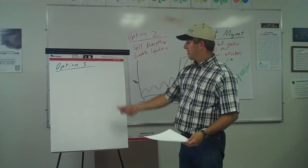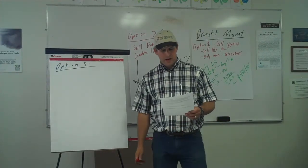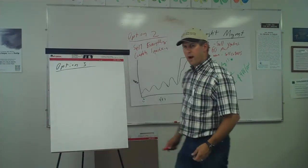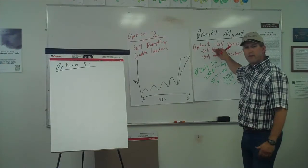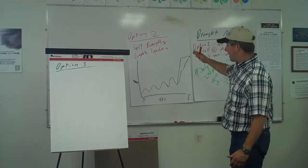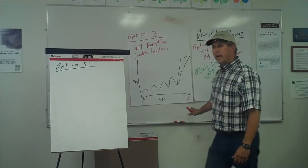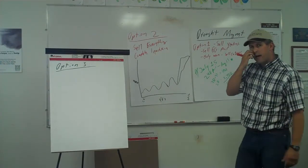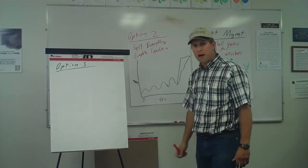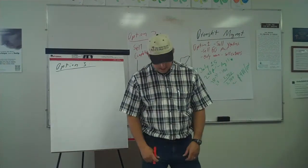All right, the next option we're going to talk about, we're going to call option three. This producer is recognizing the value of these home-raised animals, doesn't quite want to get rid of the whole factory, but recognizes the extreme forage shortage and really is not very excited about buying an additional two tons of hay per cow, especially during these high-priced hay years. So, what is he going to do?